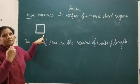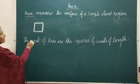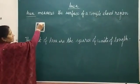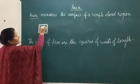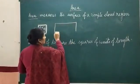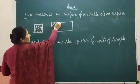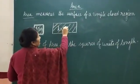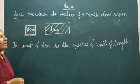Now how is area different from perimeter? Area measures the surface of a simple closed figure. What is the surface of this closed figure? Whatever is enclosed in this is called area. Suppose the perimeter is the border — the region enclosed in a closed figure is called area.